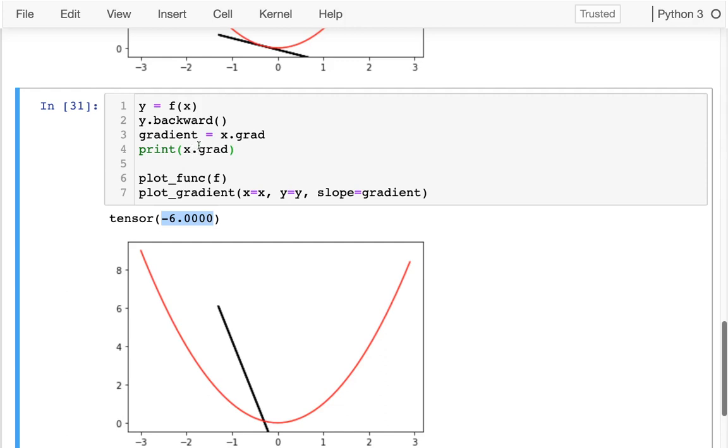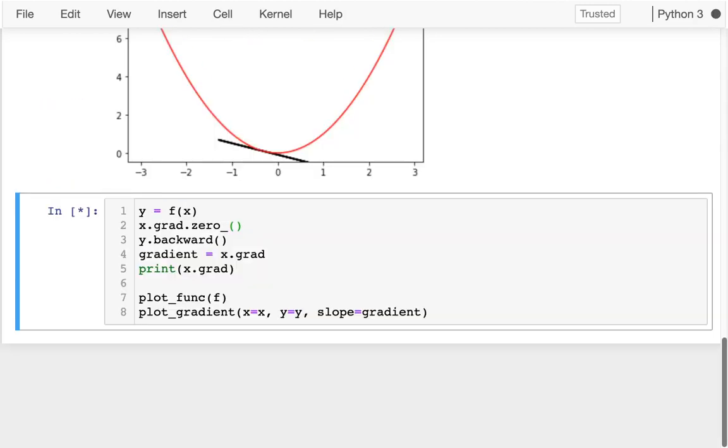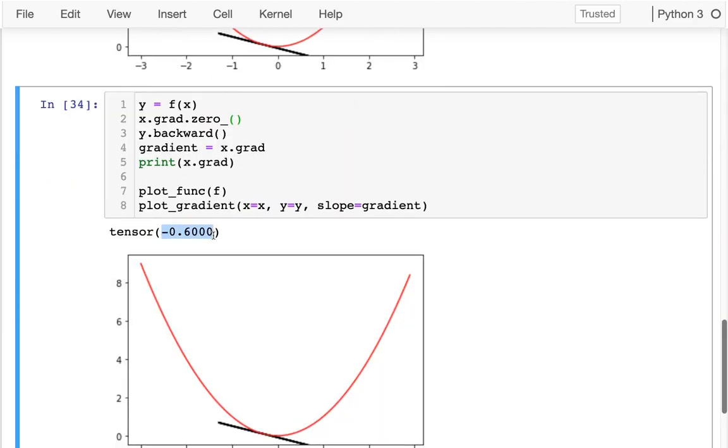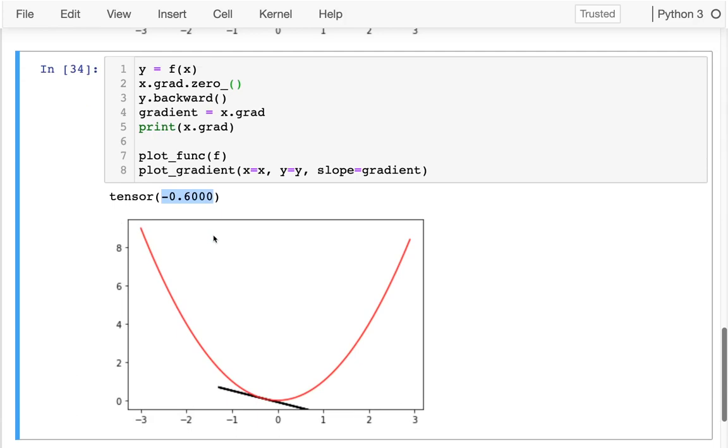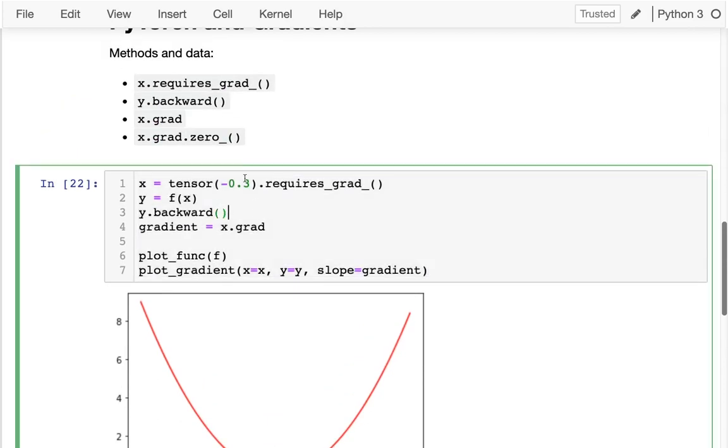And so the way we'll get around that is before we do this, which kind of just adds to the gradient, we'll make sure it's zeroed out. I'll say .grad.zero_ just like so. And now I can do it every time and it's always the same value. Because it's always adding negative 0.6 to zero, which actually gets us the answer. So one more time, let me review all those pieces.